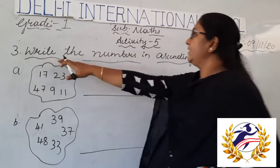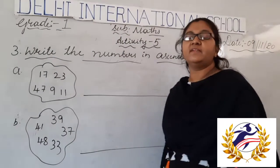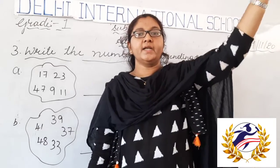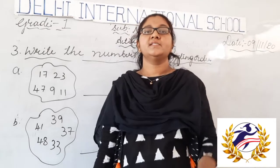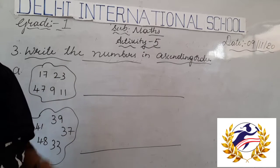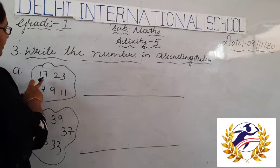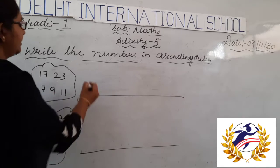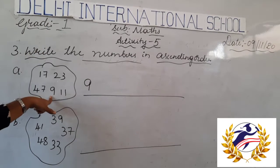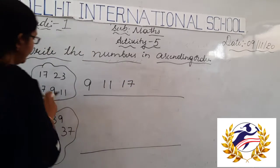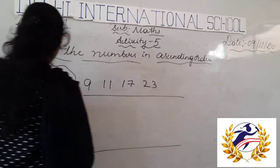Now we are arranging numbers in ascending order. In our last class, we learned how to arrange numbers in ascending order. What is ascending order? Arranging the numbers from smaller to bigger. Look at the numbers: 17, 23, 47, 9, and 11. Which is the smallest? That is 9 — it is a single digit. The single-digit number among double-digit numbers is always smaller. So: 9, then 11, then 17.